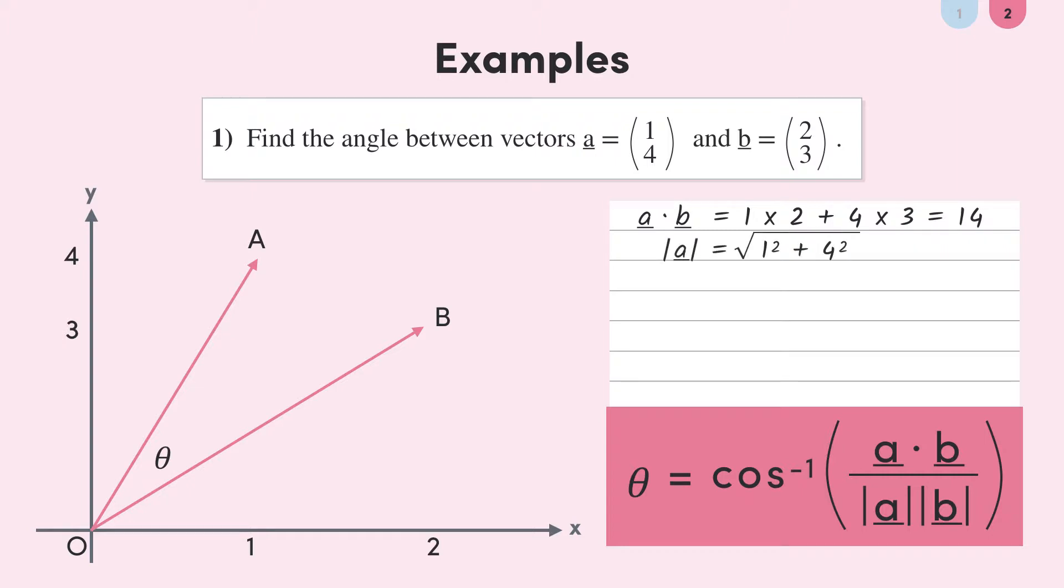The magnitude of a will be given like this, which simplifies to the square root of 17. Similarly, the magnitude of b is the square root of 4 plus 9, the square root of 13. We have everything we need for our formula, so it's a matter of simple substitution. This doesn't look very pretty, so it's best we get this into a calculator at this point. You should obtain an angle of about 19.7 degrees. And if we look to our vectors on the plane, that looks pretty reasonable.